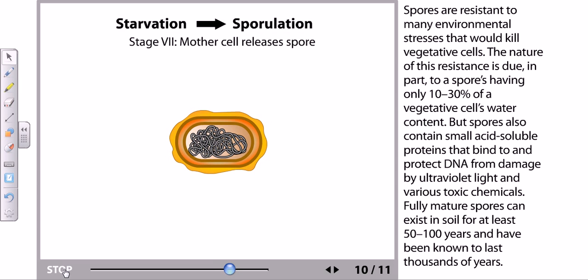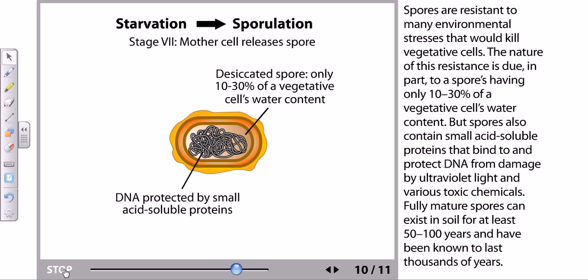But spores also contain small acid-soluble proteins that bind to and protect DNA from damage by ultraviolet light and various toxic chemicals that can cause mutations. Fully mature spores can exist in soil for at least 50 to 100 years and have been known to last thousands of years. That is the dormant position of a spore.